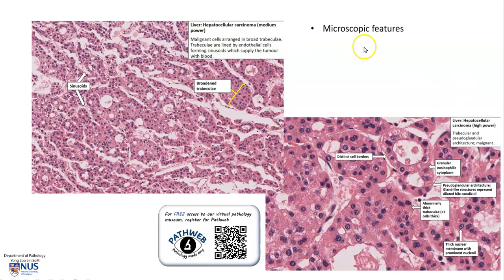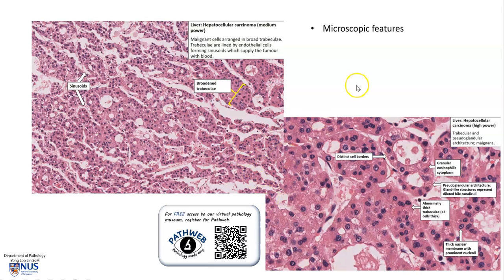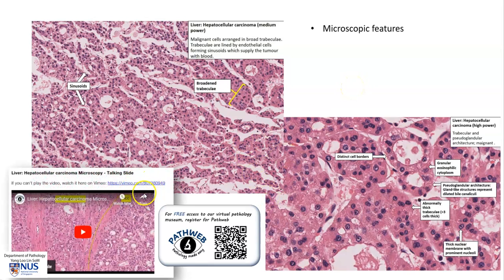There is a separate video describing the microscopic features, but briefly, on microscopy, hepatocellular carcinoma shows a disruption of architecture where the cells are arranged in very broad, abnormally broad trabeculae. Sometimes we can also see almost gland-like spaces, known as pseudoglandular architecture, which is not uncommon in HCC. Sometimes the tumor cells also produce bile. These pictures are taken from PathWeb, and you can refer to the separate video on microscopic features.